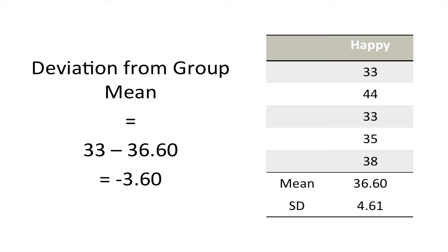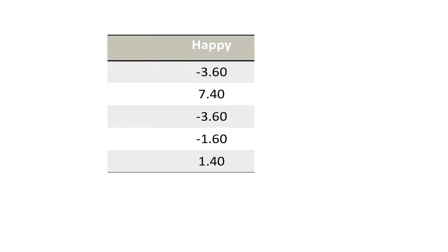If I work out the residuals for all the scores in that group, we get these values. We saw in previous videos that we don't like positive and negative numbers because they cancel each other out, so we need to use the absolute values and just get rid of any negative numbers. I'll do that here.